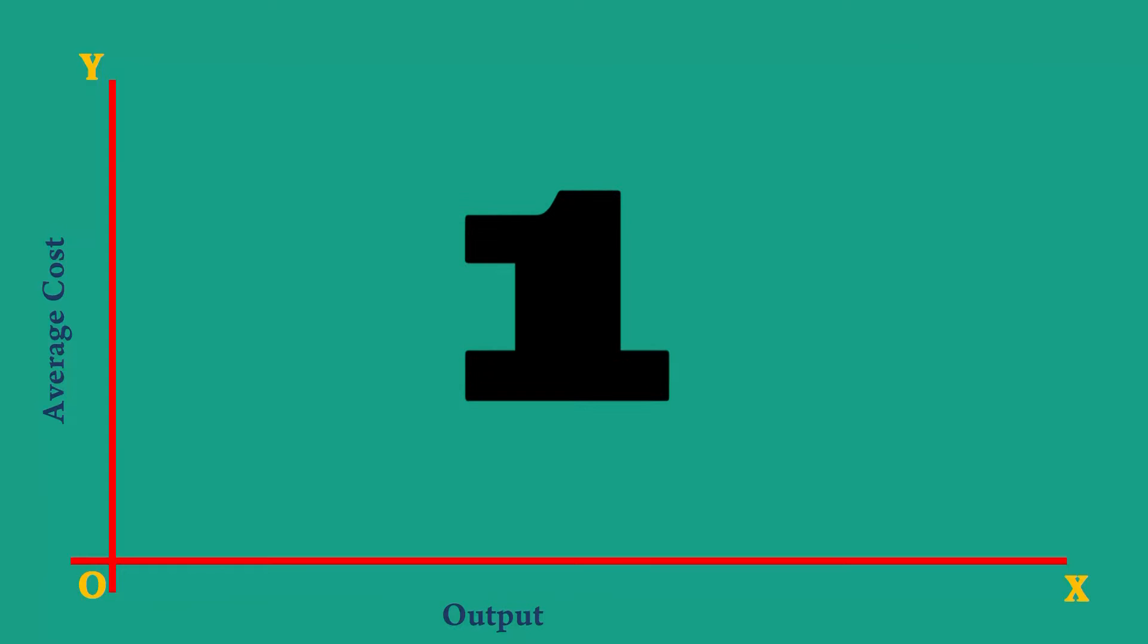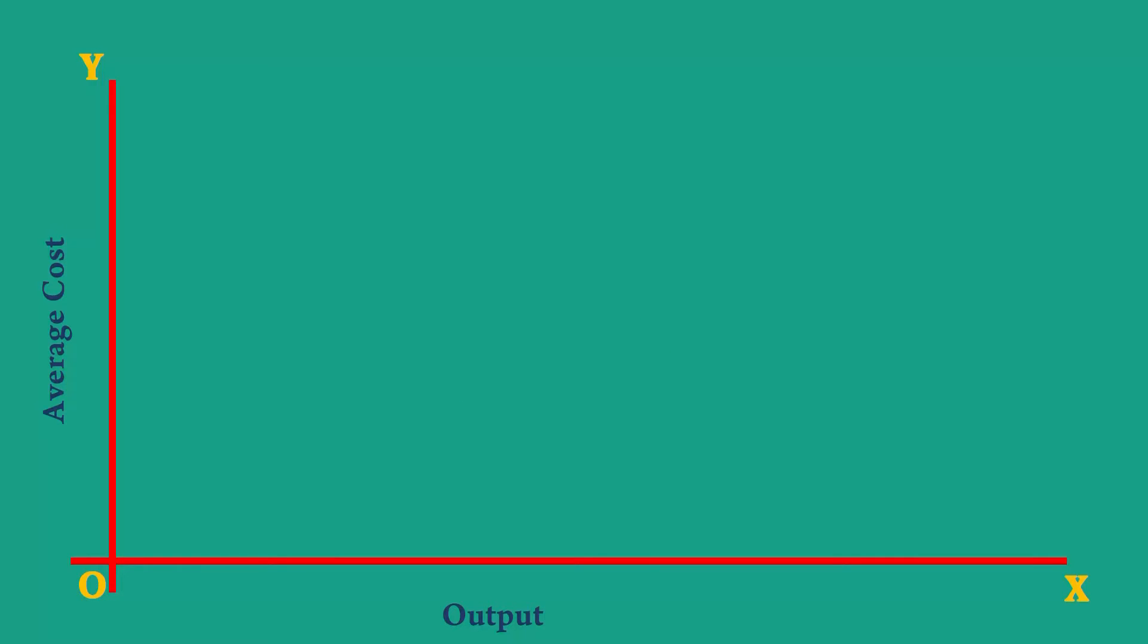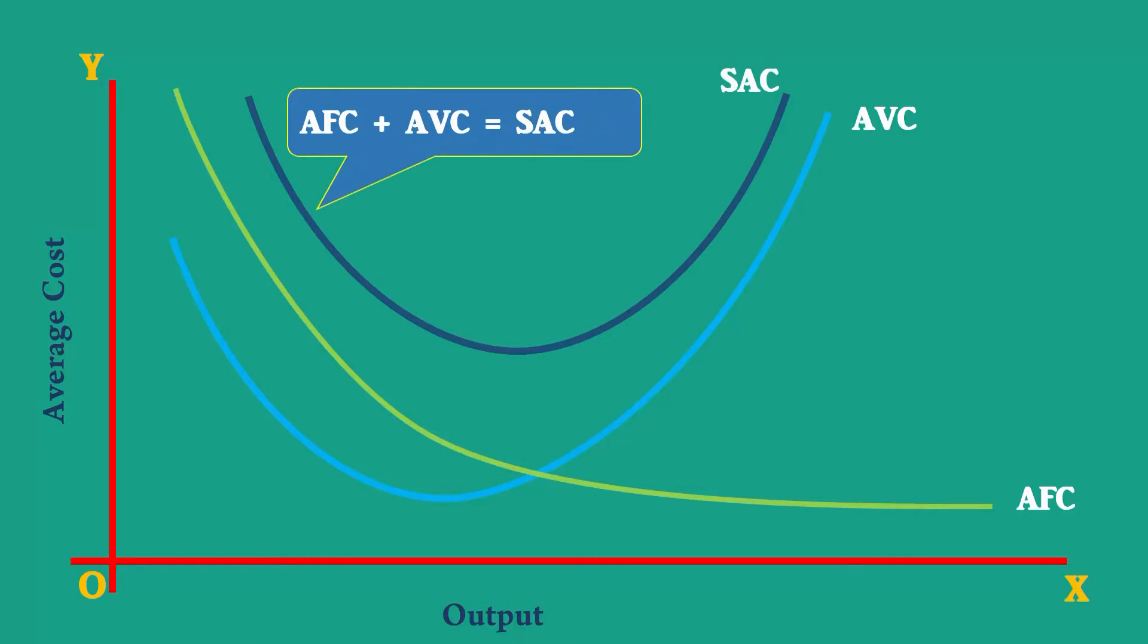First, the short run average cost curve has two components. They are average fixed cost and average variable cost. The vertical addition of average fixed cost curve and average variable cost curve gives the short run average cost curve.